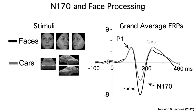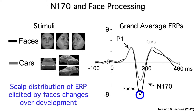The overall N170 for faces reflects a sum of many different ERP components, some of which are face-specific and some of which are present for both faces and other kinds of objects. Previous studies of the development of face processing had just looked at the ERPs elicited by faces. These studies found that the scalp distribution of the N170 changed markedly over the course of development, concluding that children and adults use different brain systems for face processing. But the change in scalp distribution might have been the result of changes in other components also present during the N170 time period, with no change in the actual face processing.